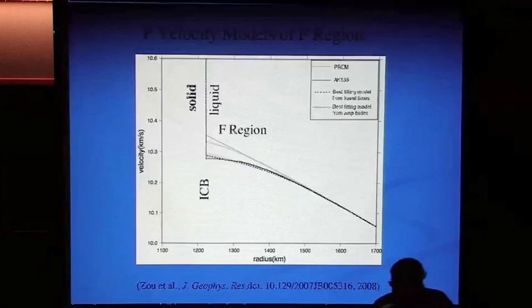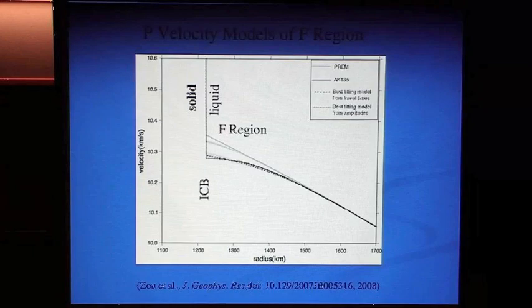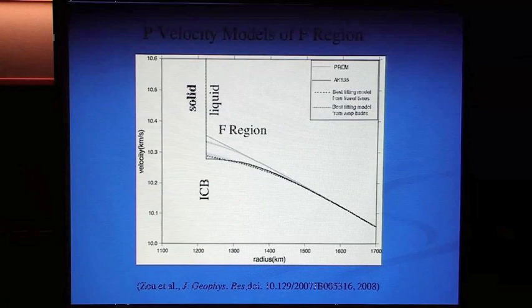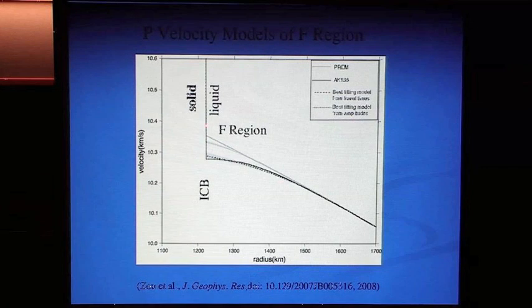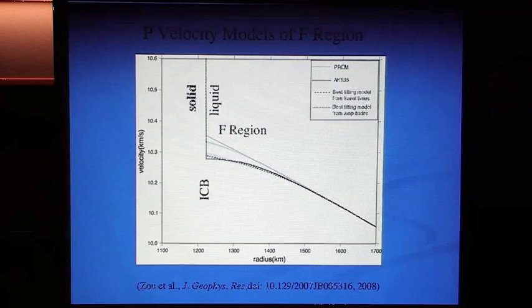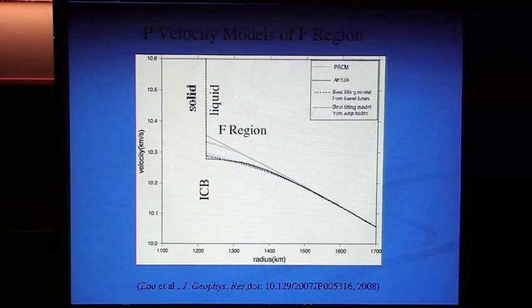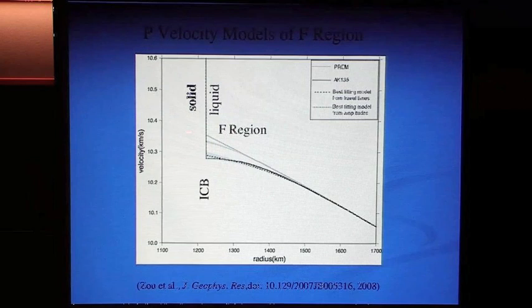This is Bullen's F region — the nomenclature dividing the Earth into regions A through F, the region just above the inner core boundary. The radius of the inner core is about 1,200 kilometers. Fitting travel times shows that the P-velocity gradient flattens out just above the inner core boundary. This could be explained by an iron enrichment in this layer consistent with a solidifying boundary, making a stagnant iron layer that does not mix well into the rest of the outer core, with lighter element plumes perhaps percolating through it.